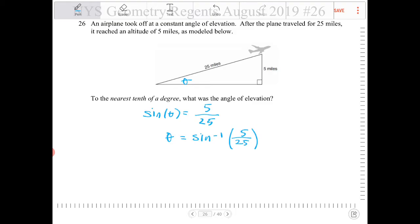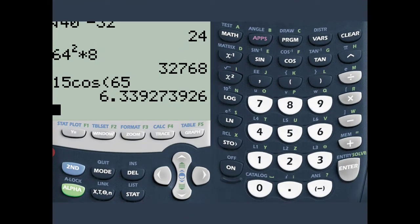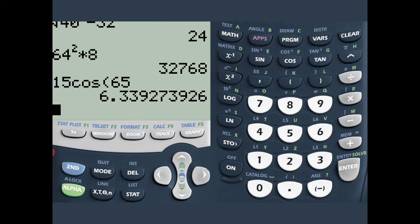So I want to enter that into the calculator. Make sure calculator setting is in degree, third row, second option. So we're going to take the inverse sine of 5/25 or 1/5.